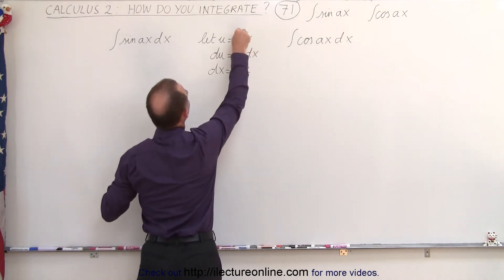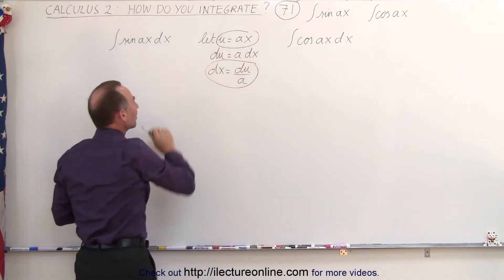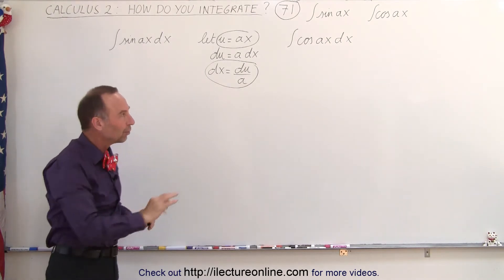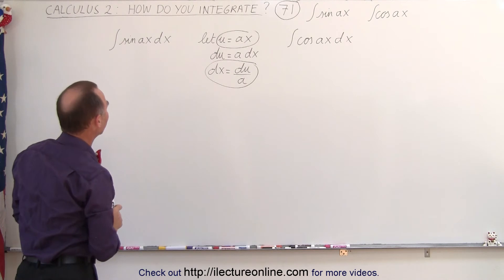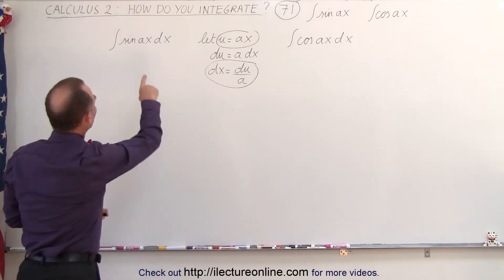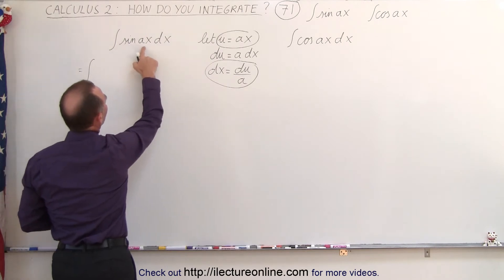And then we substitute this and this back in the integral. So let's do it this way for the sine of Ax and see what happens, and then we'll see how we can more easily and more quickly do it using a different method. So first, we're going to substitute, so this becomes equal to the integral of the sine of Ax.